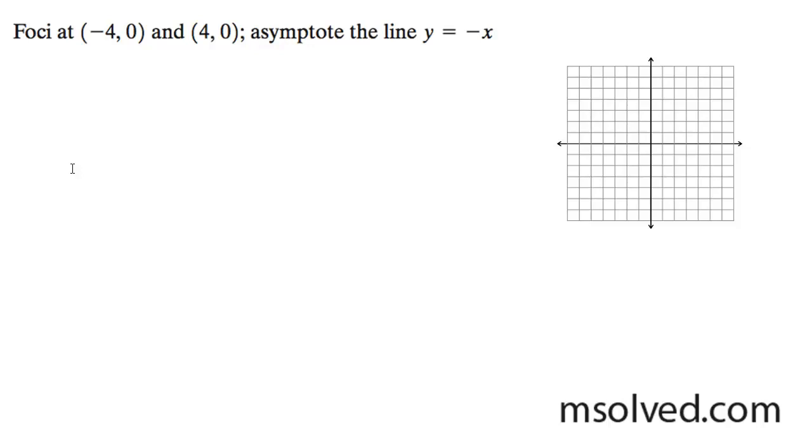So we want to find the equation for the hyperbola and then graph the equation. You can start by marking off the foci at negative 4, 0 and 4, 0.